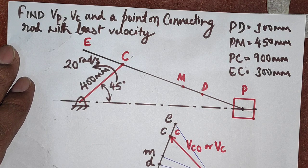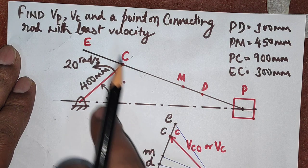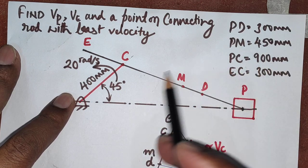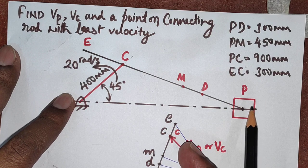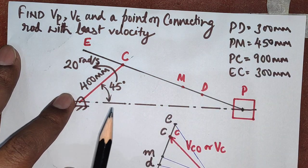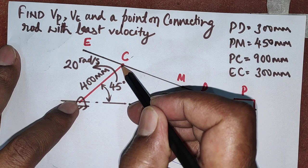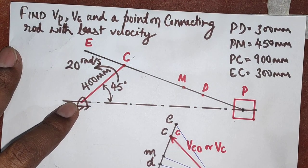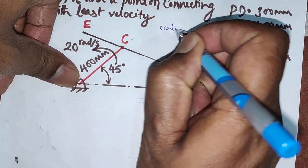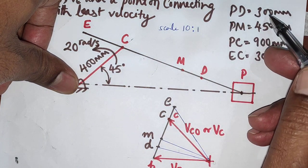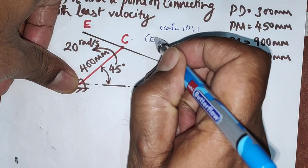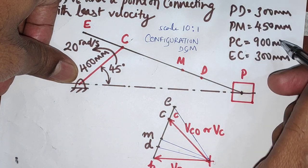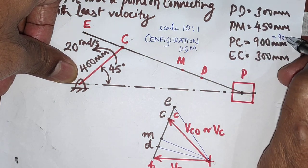In the examination, the first thing you have to do is construct the diagram to some scale. Since the connecting rod is 900 mm, you can't draw it full size — 900 mm is 90 centimeters, which is not possible. So you take a scale of 10:1, reducing all dimensions by 10 times. The 400 mm crank becomes 40 mm, the 900 mm connecting rod becomes 90 mm, and so on. This is called the configuration diagram.